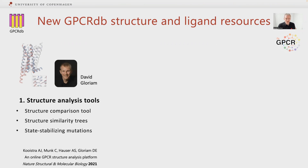In the first part, I will brief you on three tools published in Nature Structural Molecular Biology end of last year. First, a tool to identify determinants that are unique or common for receptors based on structural comparison. Secondly, trees clustering receptors not by sequence but by their 3D conformation. And finally, mutations that can stabilize an inactive or an active GPSR state.